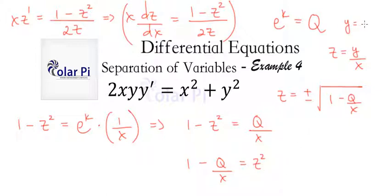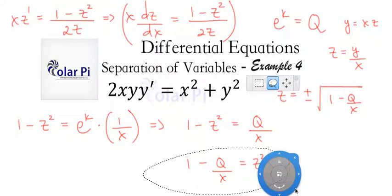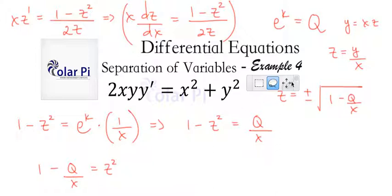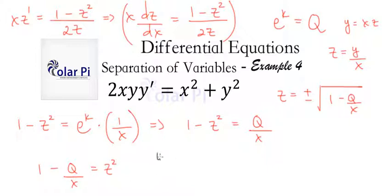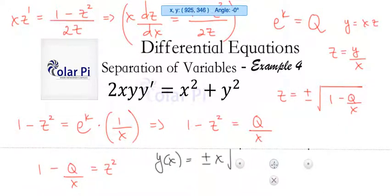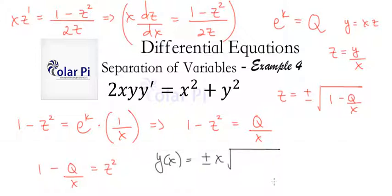Since z equals y/x, we have y equals x times z. Therefore our final solution is y(x) equals plus or minus x times the square root of (1 minus q/x). And that's my final example of separation of variables.